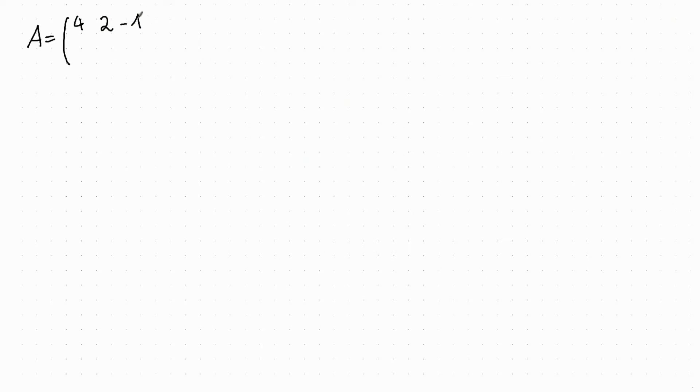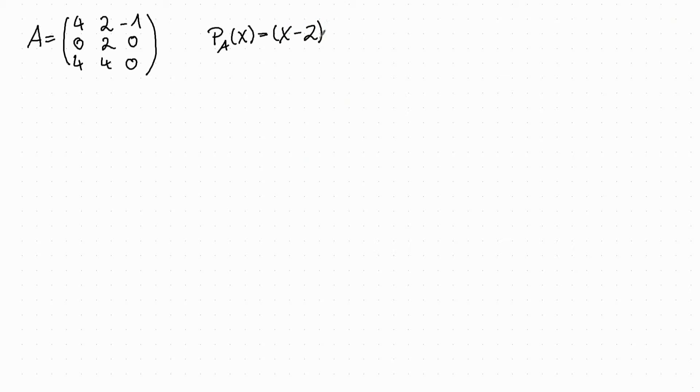Hello. In this video we will compute the Jordan normal form of a 3x3 matrix with one eigenvalue and two Jordan blocks. We consider the following matrix: A is equal to 4, 2, minus 1, 0, 2, 0, 4, 4, 0. And the characteristic polynomial is equal to (x minus 2) cubed.